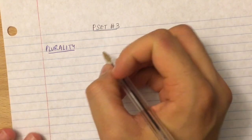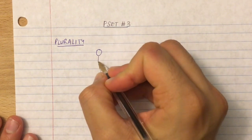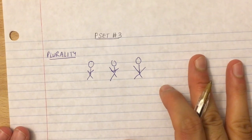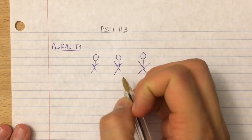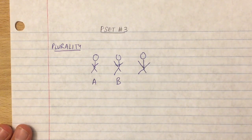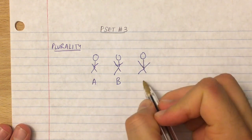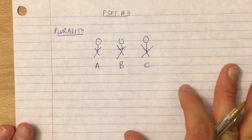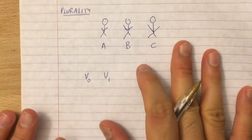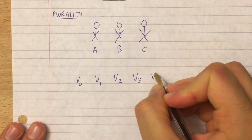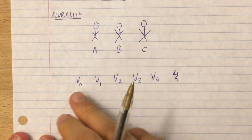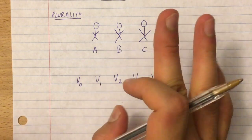As an example, say there are three candidates running in an election — Alice, Bob, and Charlie — and there are five voters. Each voter votes for one candidate. That's the simplest model here.